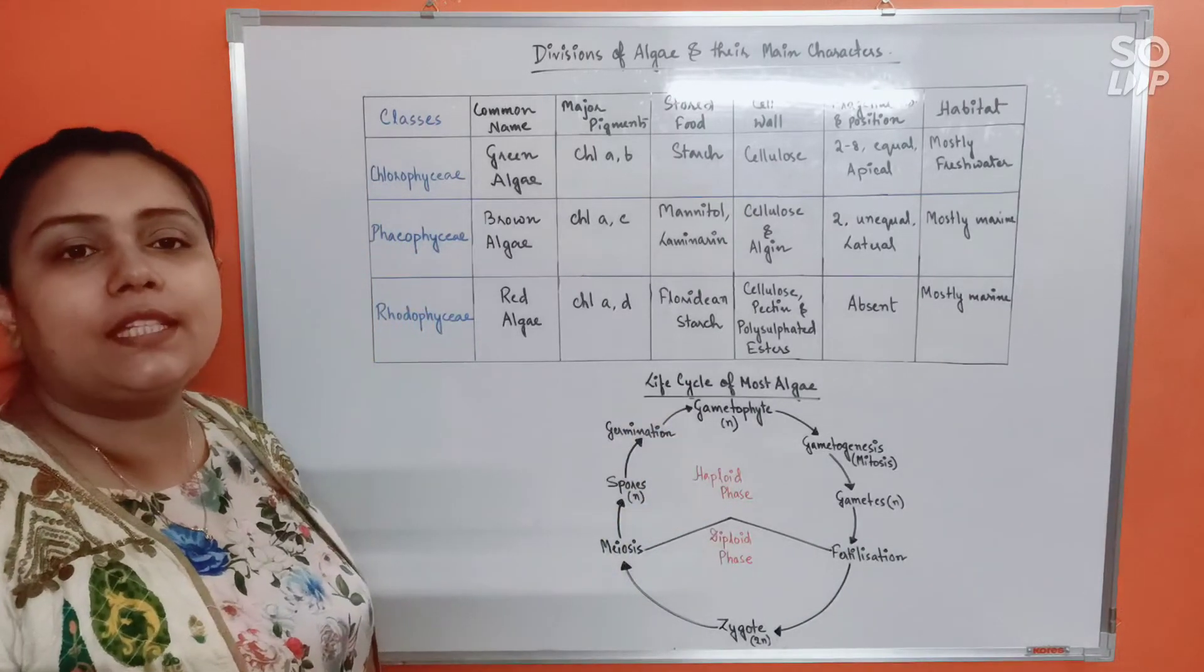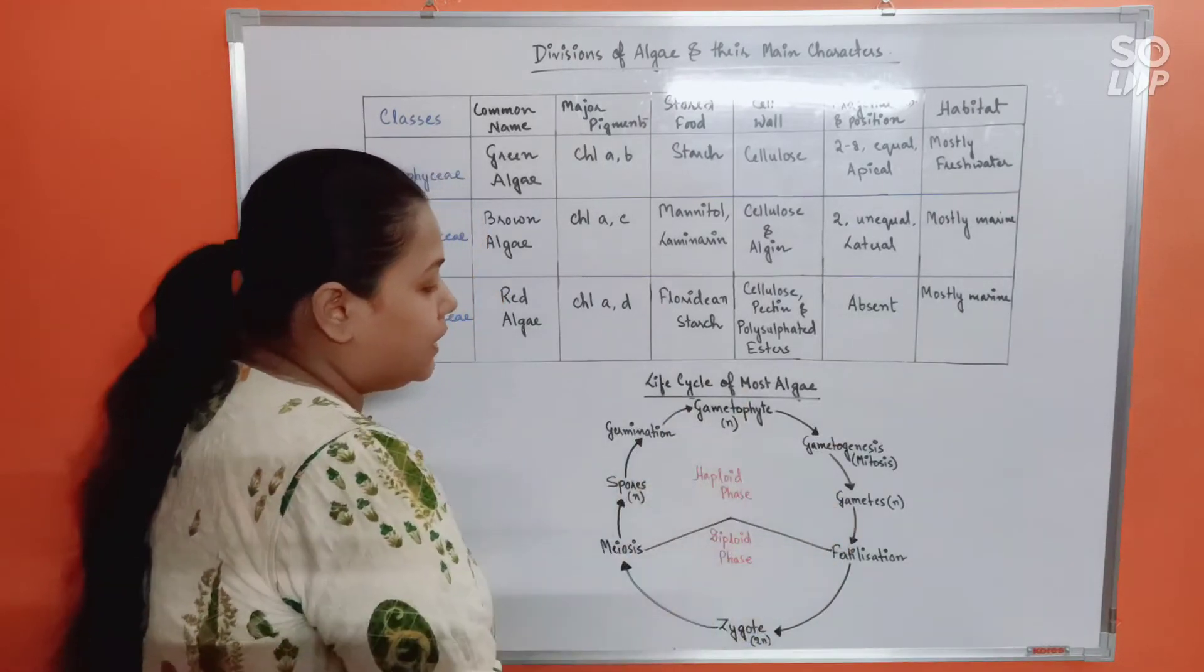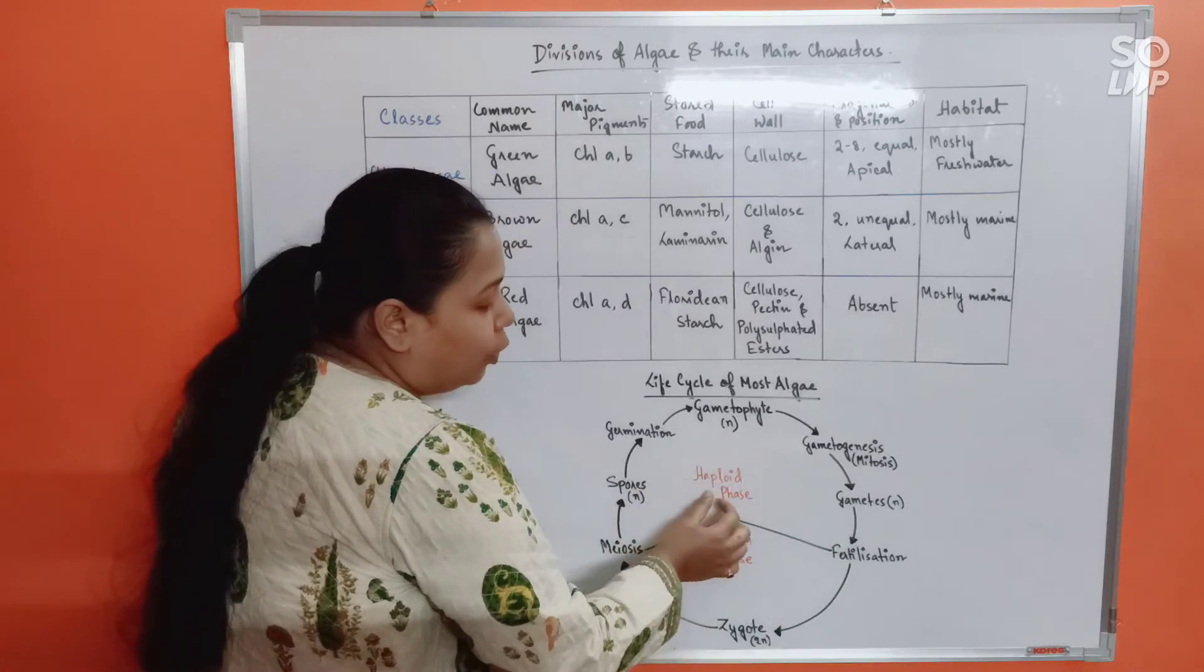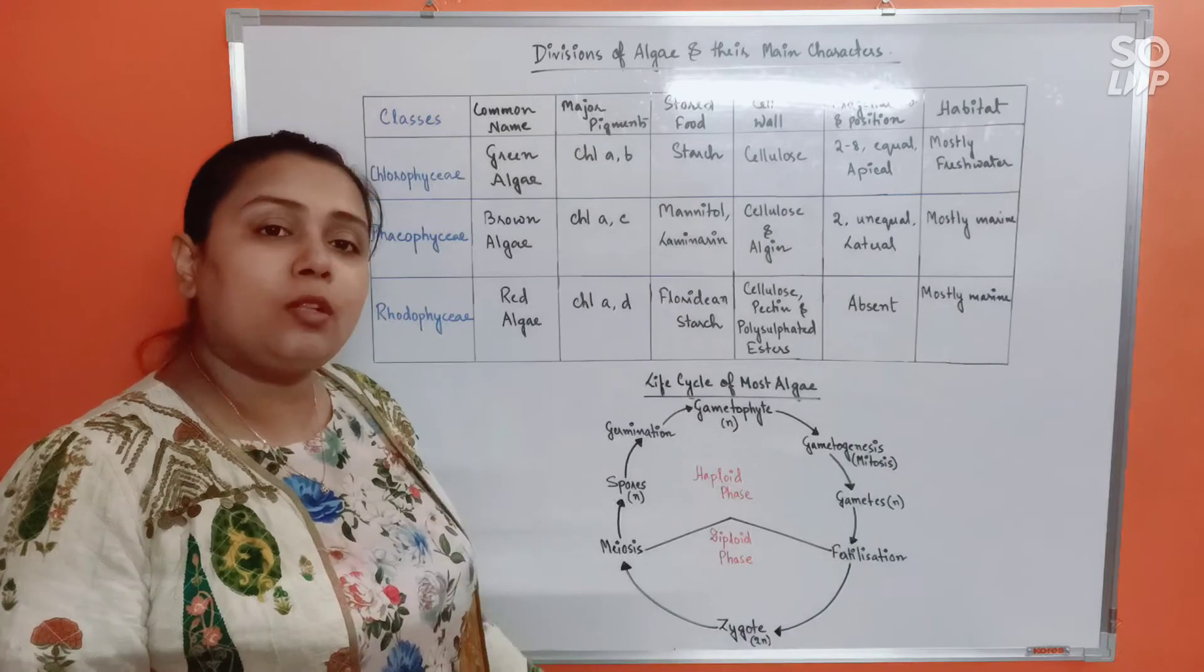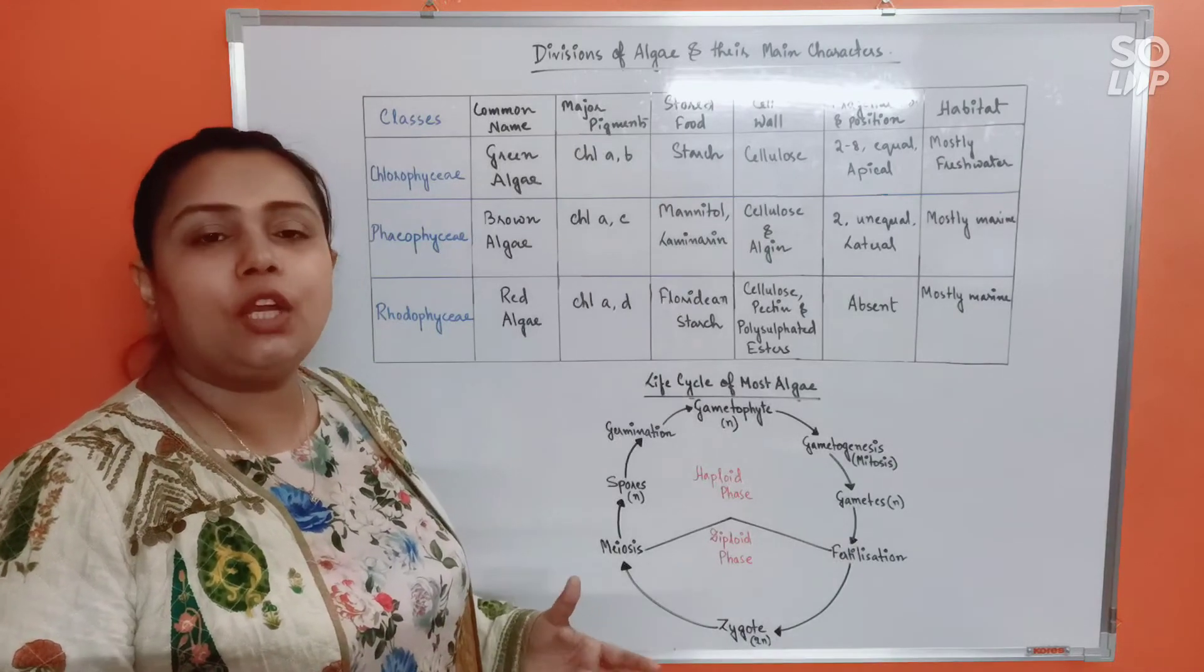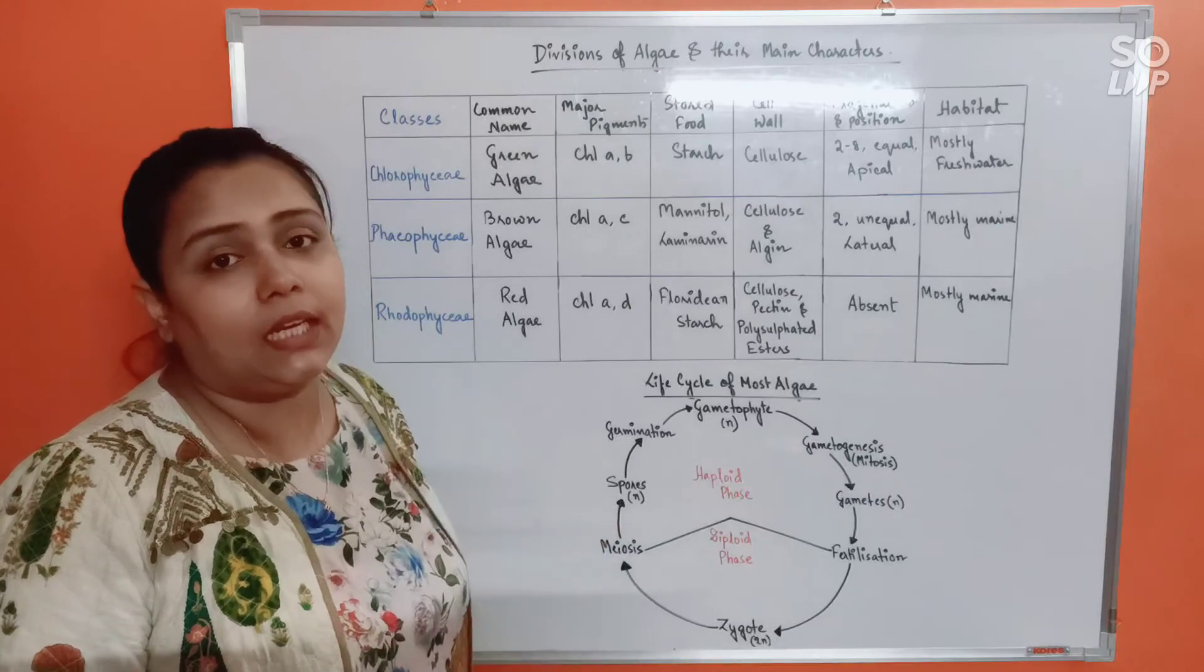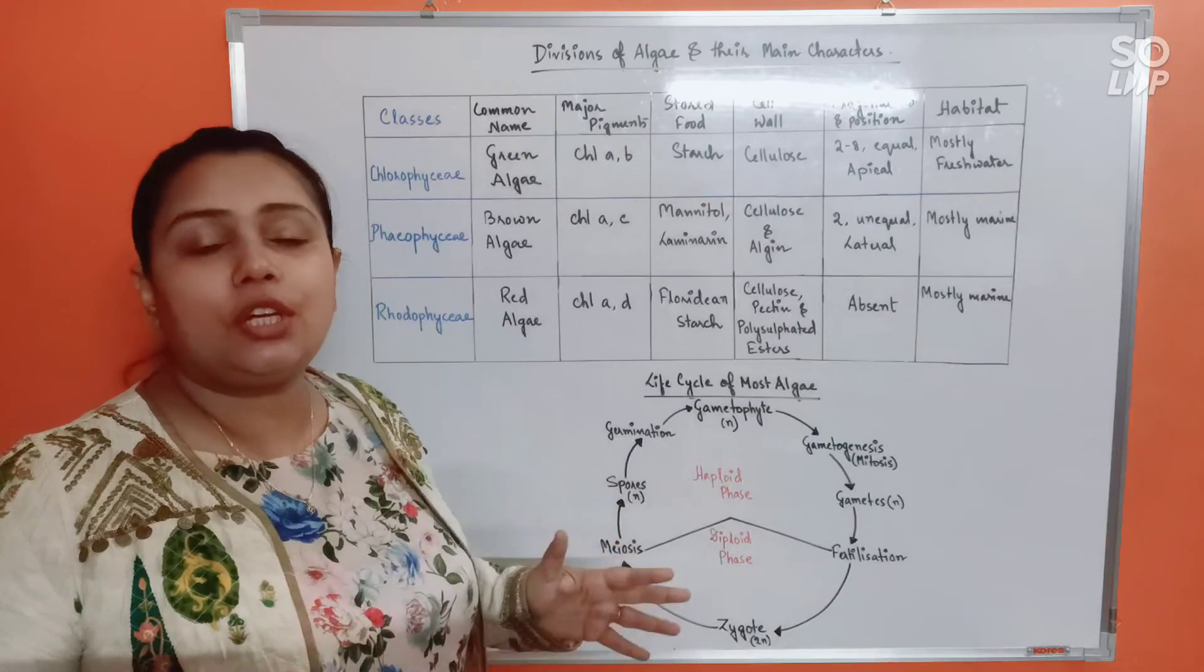So most of the time, you can see that the life cycle consists of haploid phase. The only diploid thing formed in the life cycle is the zygote, which also immediately after formation will undergo meiosis, giving rise to haploid state again. So that's why in this life cycle, majority or what is dominantly found is the haploid phase or gametophytic phase. So we should say that most algae are showing haplontic life cycle.